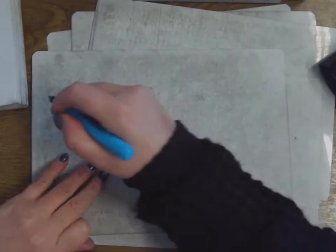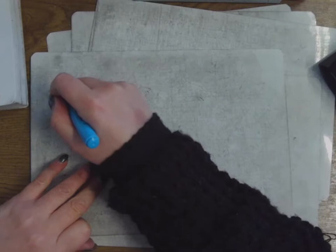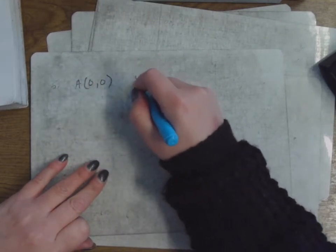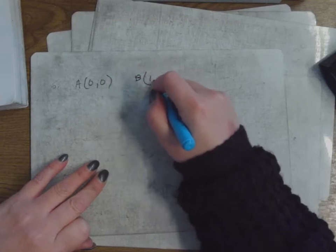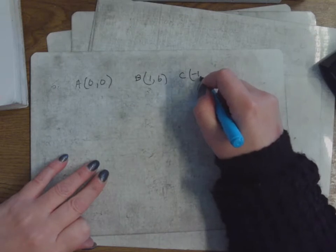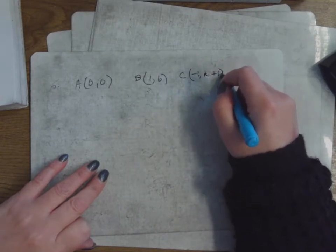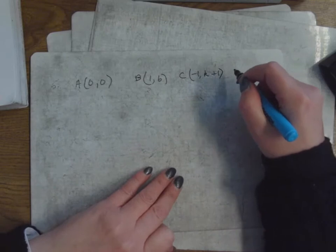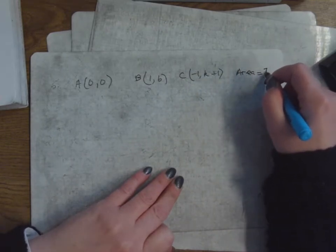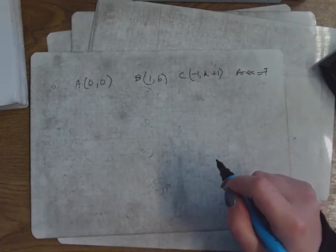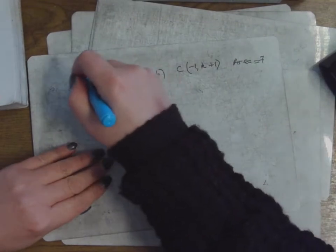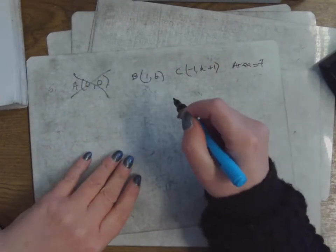Number five. A is (0,0), B is (1,6), and C is (-1, k+1) — the vertices of a triangle. This time they're telling me the answer: the area is equal to 7. Find two values for k. There's a hint in that — find two values. One of them is (0,0) so I can ignore it — I don't have to do a translation.